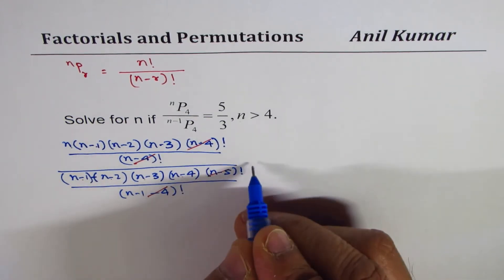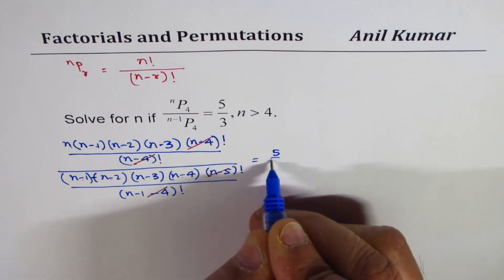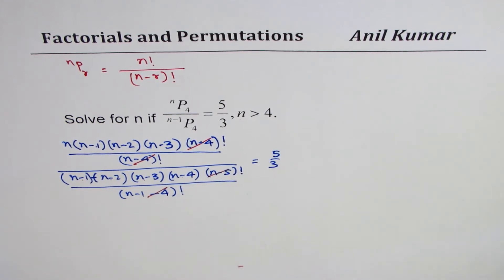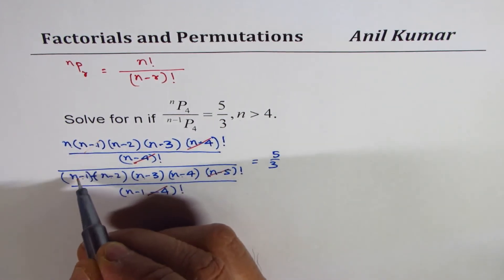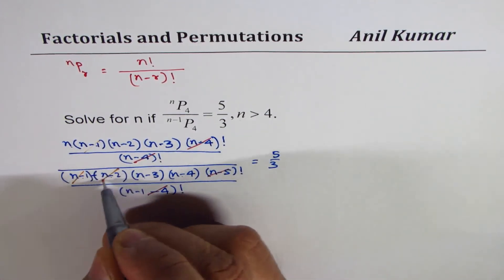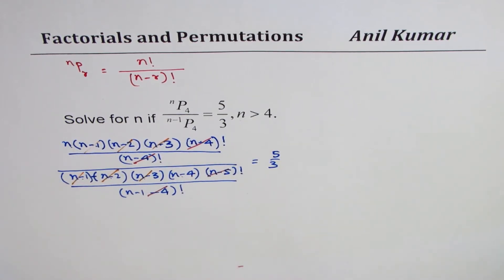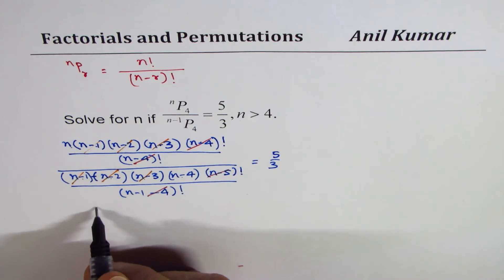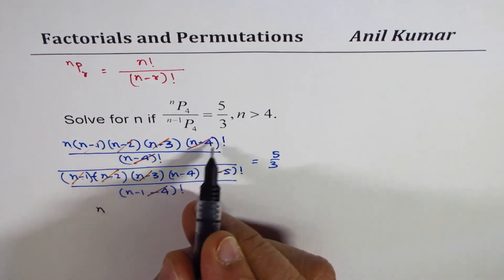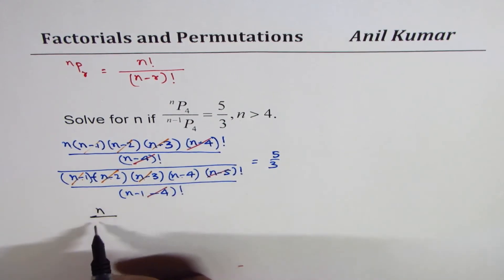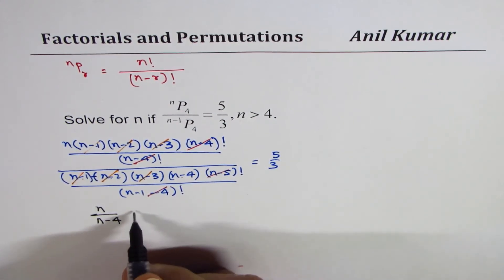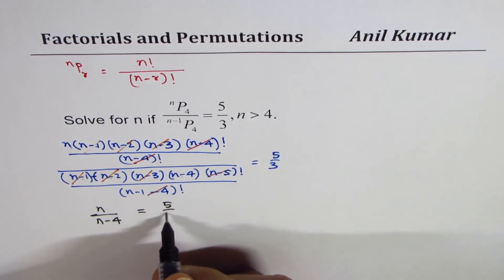This is equal to 5 over 3. Now let us see what else can be cancelled off. We observe that (n minus 1), (n minus 2), and (n minus 3) can all be cancelled. What we get is n in the numerator, and in the denominator we have (n minus 4), equal to 5 over 3.